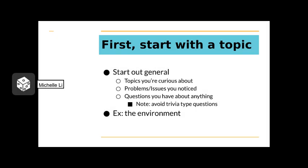First, we need to have a main topic for your research question. This topic can be anything and can start out general, such as topics you're curious about, problems or issues you notice around you, or questions you have about anything. Note that the question can't be too simple — it shouldn't be answerable by a quick Google or Wikipedia search. It should be something that can be argued over and requires evidence to back up an answer. For this video's example, I will start with the general topic: the environment. Pause the video, write your topic down, then continue.